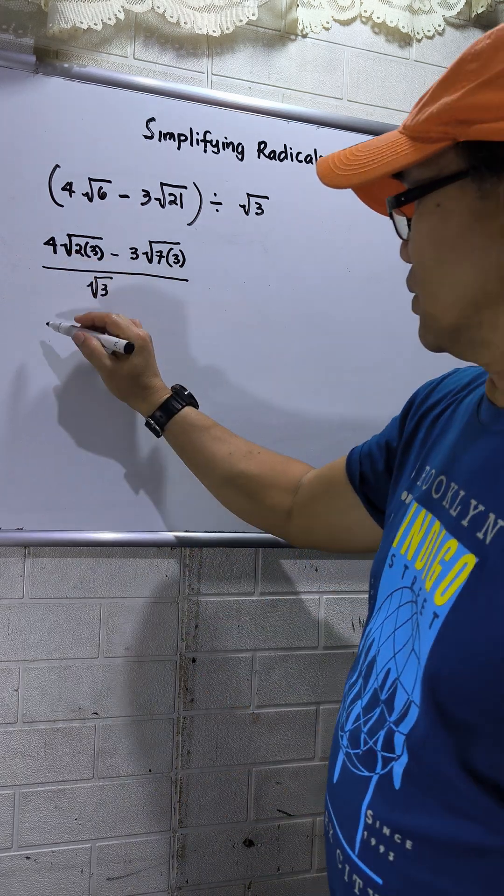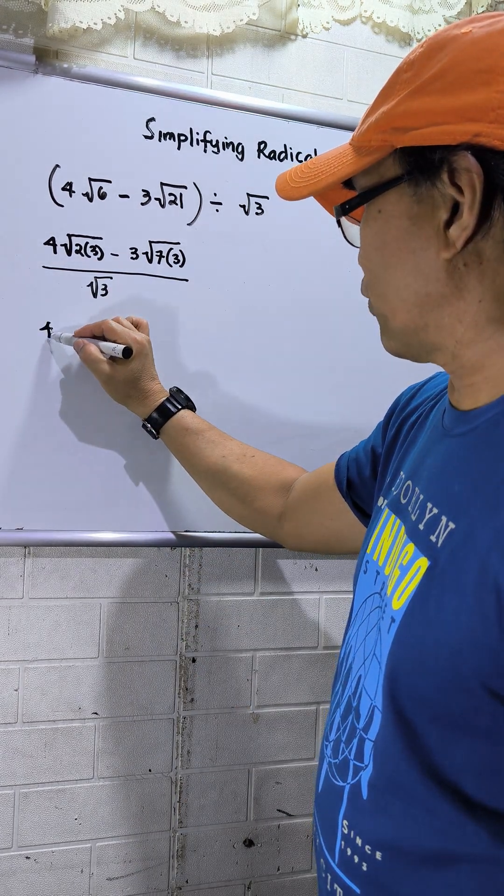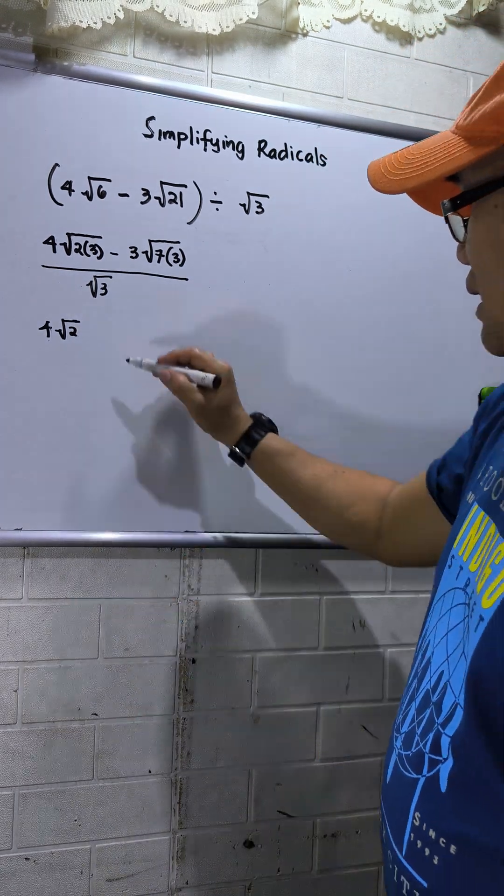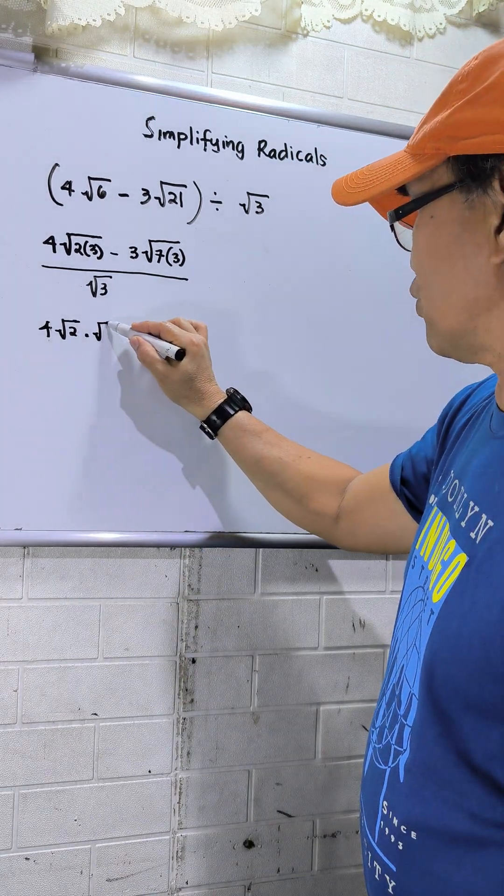For the numerator, I have 4 square root of 2. I will split the radical. Then this will be times square root of 3.